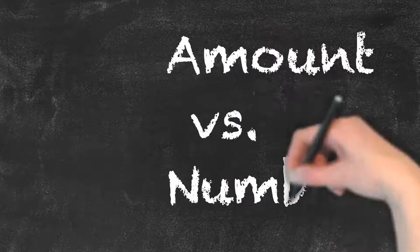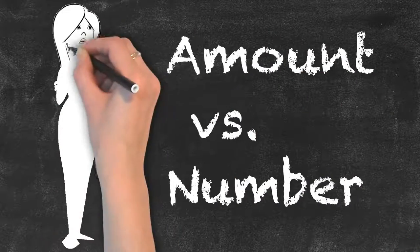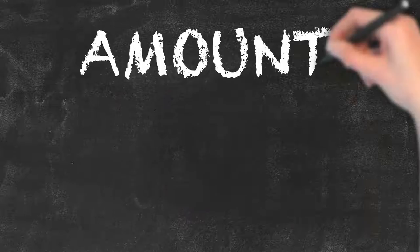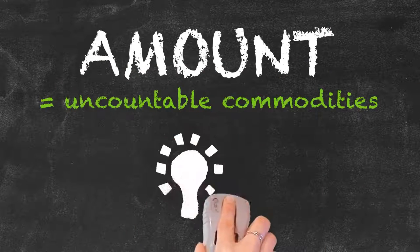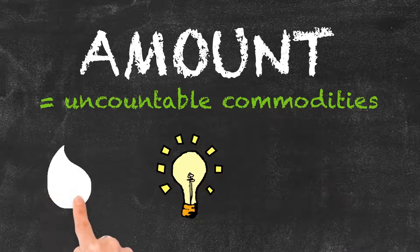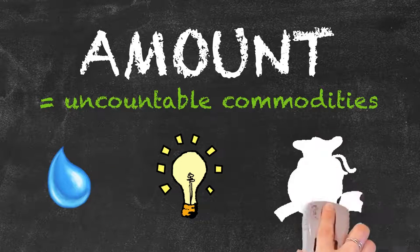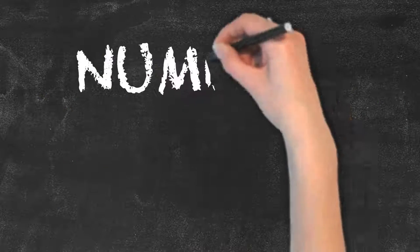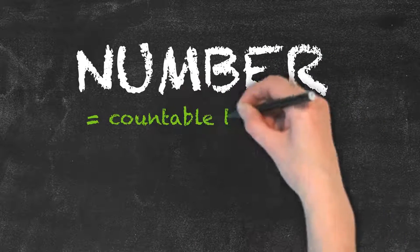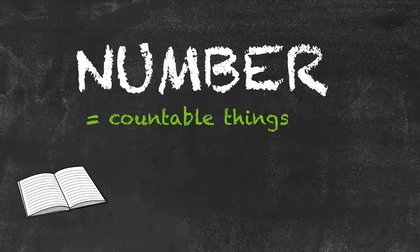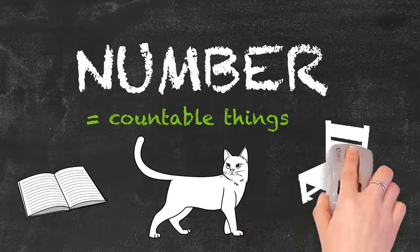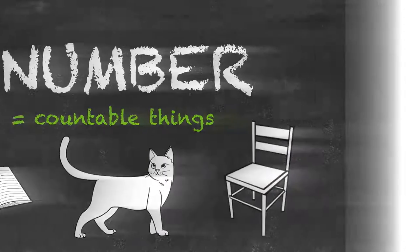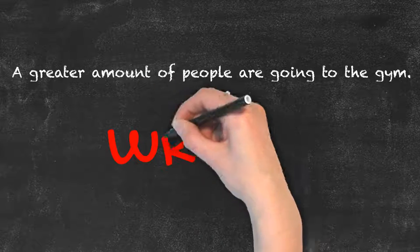Amount versus number — these two words are often confused, but bear in mind that they are not interchangeable. Amount refers to uncountable commodities such as water, electricity, money, advice, and so on. Number is used for individual things that are countable, such as book, cat, chair, and so on.